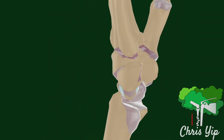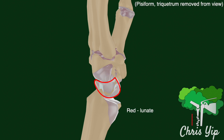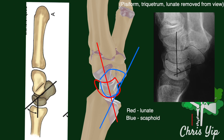On the lateral view of the wrist, the scapholunate angle can also be measured. In this model, the lunate can only be seen after removing the pisiform and triquetrum. First, draw a line along the axis of the lunate, then draw another line along the volar axis of the scaphoid. The scapholunate angle indicates a dorsal intercalated segment instability if it is greater than 70 degrees.